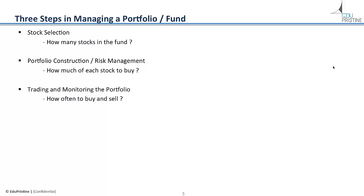The third step in managing the portfolio is to continuously monitor and make changes so that the reward-to-risk ratio is optimal. The strategy for rebalancing includes the rules that determine changes to the portfolio, what stocks to buy and sell, and the frequency of making those changes.